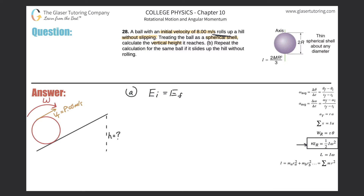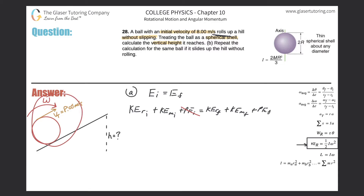Let's detail all those energies. The rotational kinetic energy initially, plus the translational kinetic energy initially, plus the gravitational potential energy initially, equals those same three final values. Now we can cancel easy terms: at the bottom of the hill there is no gravitational potential energy, so that initial PE term goes to zero.